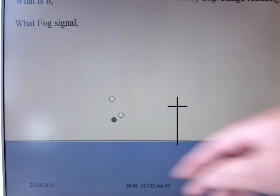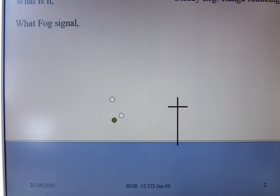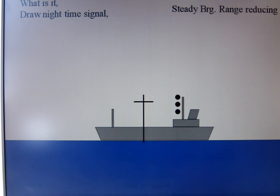She doesn't carry a day signal because it's the most common vessel that you'll see. Her fog signal has two options now. One is that if she's making way, it will be one prolonged blast on the ship's whistle in intervals not exceeding two minutes. But if she has stopped and not making way through the water, then it will be two prolonged blasts on the ship's whistle in intervals not exceeding two minutes.